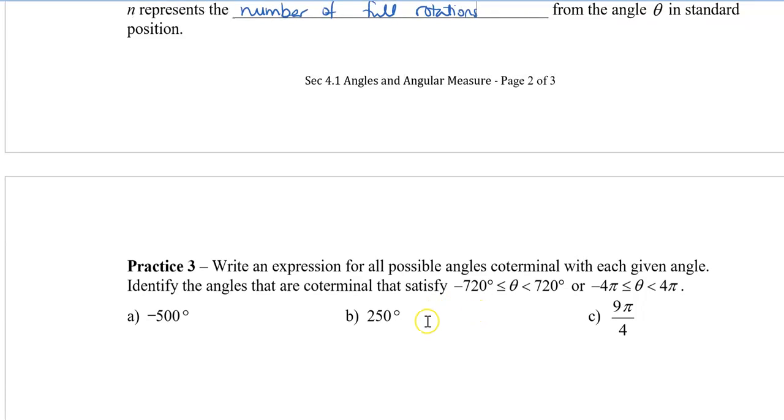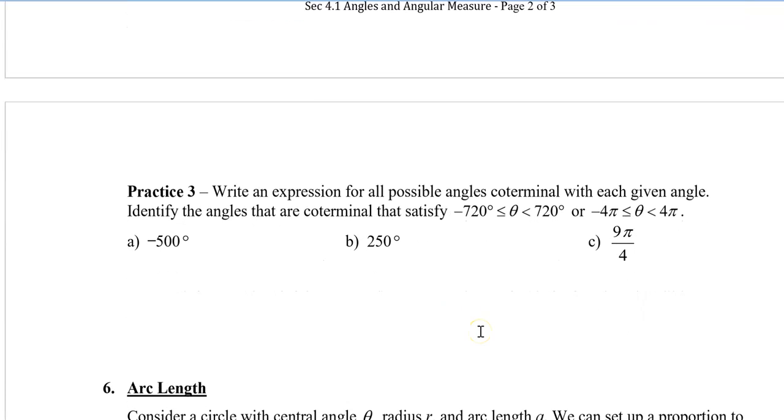So let's take a look at one example. So let's say that I have negative 500 degrees, and I want to find other coterminal angles that satisfy. So this would be, I'm going to give you a range from negative 720 degrees to 720 degrees. So we can say that negative 500 plus or minus 360 degrees n will give us all the angles that we want.